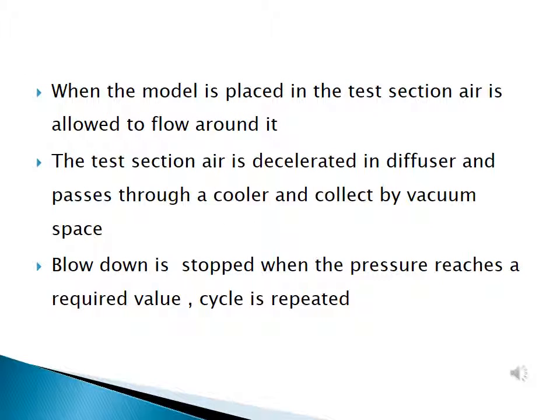When the model is placed in the test section, air is allowed to flow around it. The test section air is decelerated in the diffuser, passes through a cooler, and is collected by the vacuum space. Blow-down is stopped when the pressure reaches the required value, and the cycle is repeated.